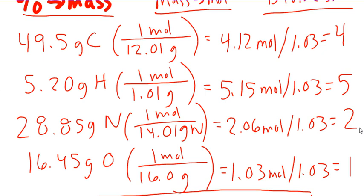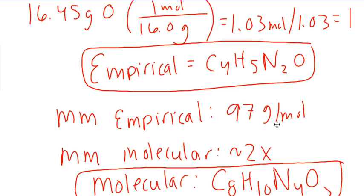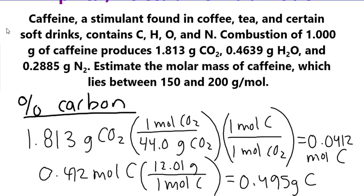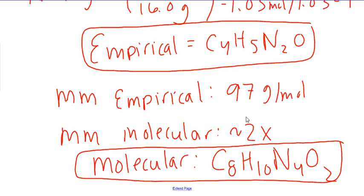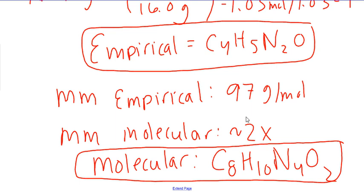The empirical formula is found, and the molar mass of the empirical formula is 97 g/mol. The molar mass of caffeine lies between 150 and 200 g/mol. The only multiplier that fits in that range is 2 — multiplying by 1 is too small, multiplying by 3 is too big. So we double everything, giving the molecular formula of caffeine: C8H10N4O2.